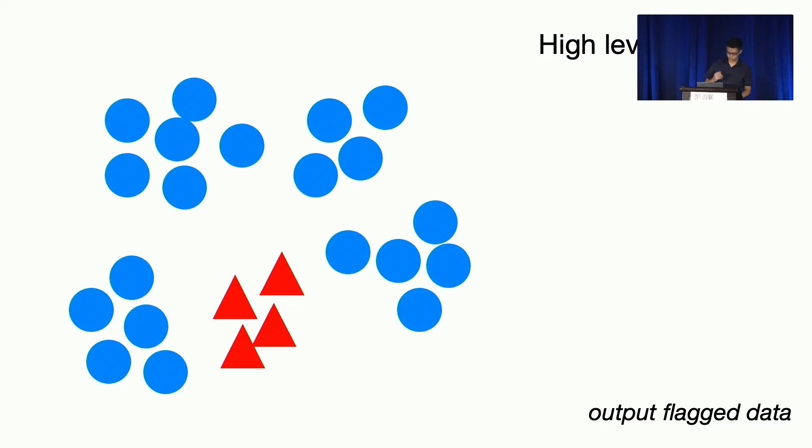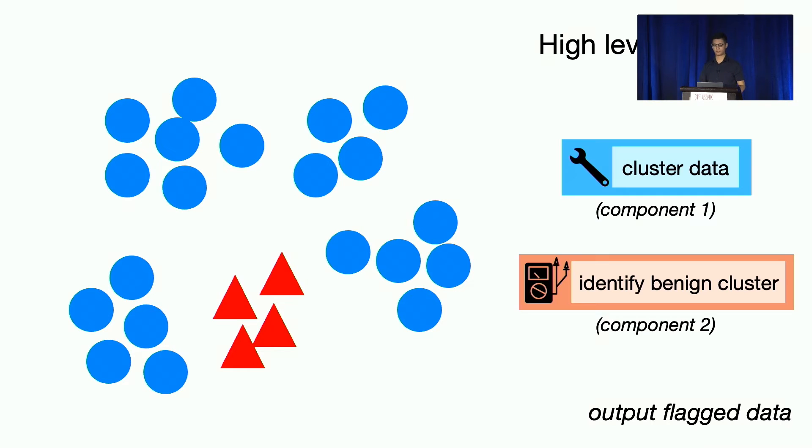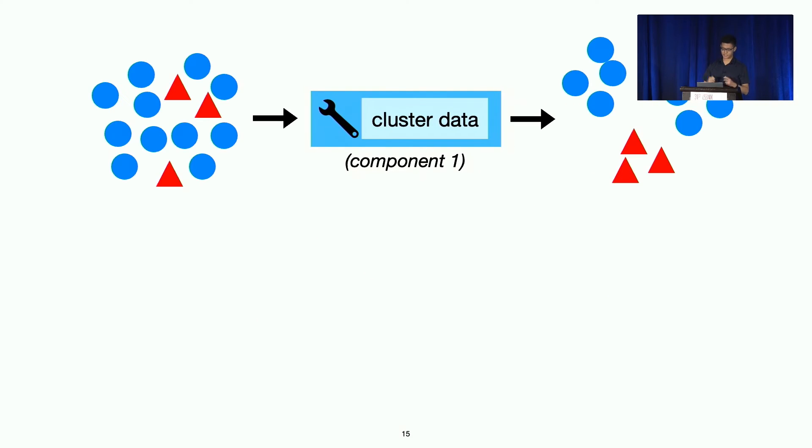I hope this end-to-end illustration is clear. Now we need to talk about the two components that make this work. First is data clustering. And second is how to identify benign clusters. Start with data clustering. The idea is simple. We just need to project the data into an embedding space to group similar types of data together.